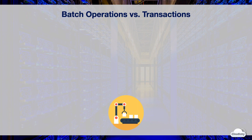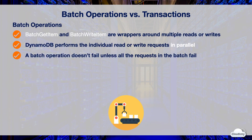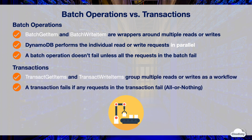However, there are some key differences. Batch operations allow you to read or write multiple items with a single bulk operation. BatchGetItem and BatchWriteItem are simple wrappers of multiple read or write requests — DynamoDB performs individual reads or writes in parallel. A batch operation doesn't fail unless all the requests fail; each read or write is an independent request, so if one fails, other requests within the batch are not affected.